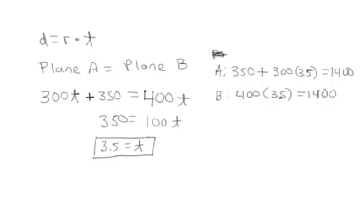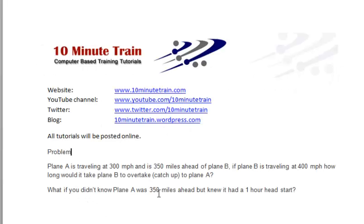So let's go back and look at the second option there. What if we didn't know plane A was 350 miles ahead, but we did know that it had a one-hour head start?